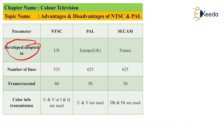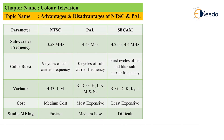In NTSC, 525 lines are used, while in PAL and SECAM the number of lines is 625. In NTSC, 60 frames per second are used, whereas PAL and SECAM use 50 frames per second. For color information transmission, NTSC uses U and V or I and Q, PAL uses U and V, and SECAM uses DB or DR. The subcarrier frequency for NTSC is 3.58 megahertz, for PAL it is 4.43 megahertz, and for SECAM it is 4.25 or 4.44 megahertz.